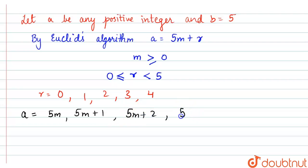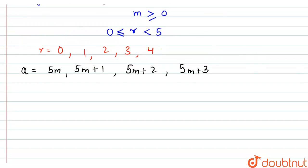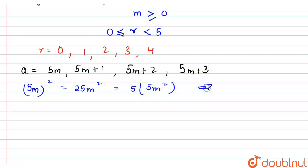Now if we take (5m)², we can write this as 25m², which we can write as 5 into 5m². So this can be written in the form 5q, where q is any integer.